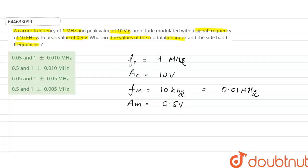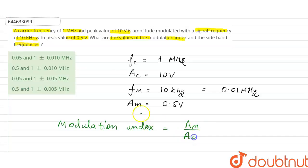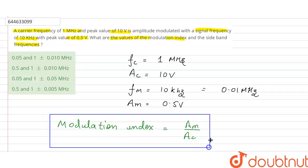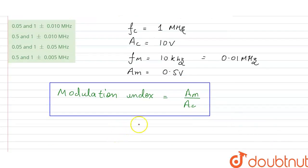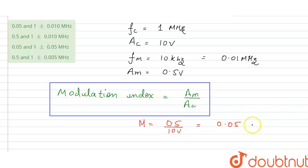Now we have to find the modulation index. The formula for modulation index is Am divided by Ac, that is the amplitude of the modulation wave divided by the amplitude of the carrier wave. So the modulation index equals 0.5 divided by 10 volt, which comes out to be 0.05. This is the value of our modulation index.